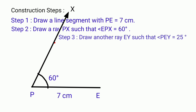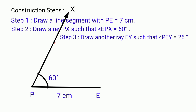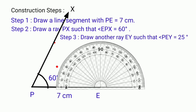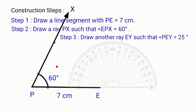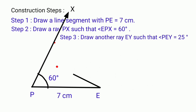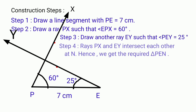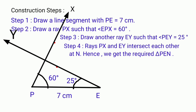Step 3: Draw another ray EY such that angle PEY equals to 25 degrees. Step 4: Rays PX and EY intersect each other at N. Hence we get the required triangle PEN.